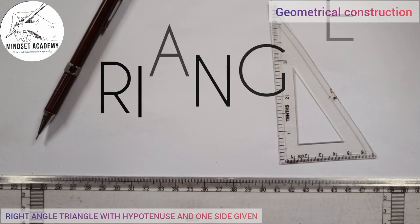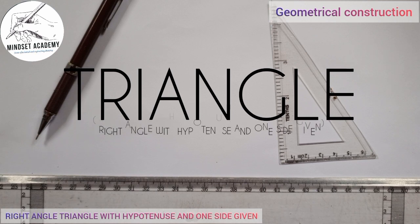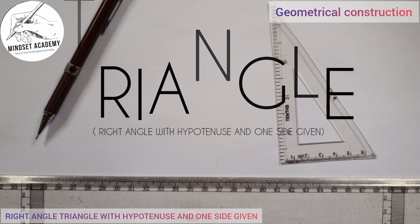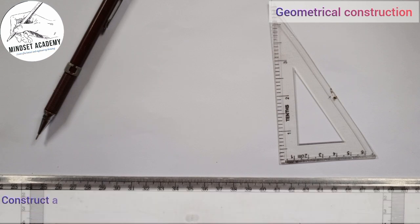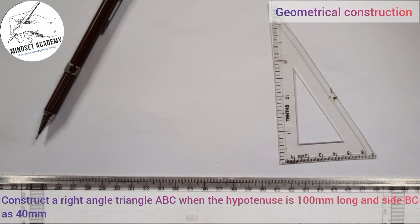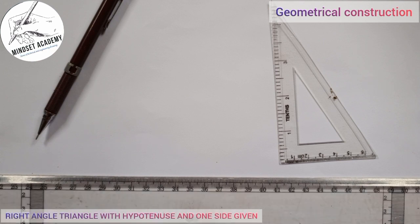Welcome to my channel Mindset Academy. We're going to solve a problem involving triangles. The question says: construct a right angle triangle ABC when the hypotenuse is 100 millimeters long and side BC is 40 millimeters. Now the first thing you have to do...